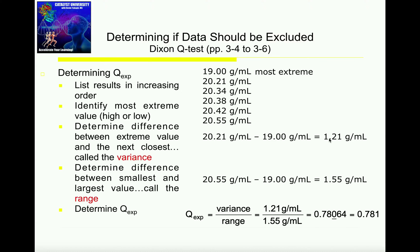The next thing I need to do is calculate the range of the data. This is the same range that you've always calculated in a statistics course. You just take the high value minus the low value. So our high value is 20.55, and I'm just going to subtract the low value, which happens to be our extreme value 19.00. Our range is 1.55.